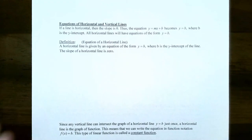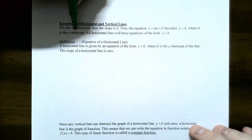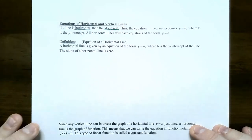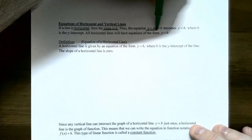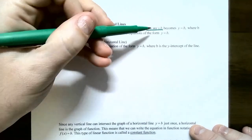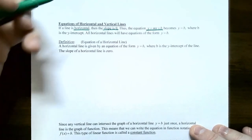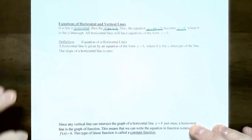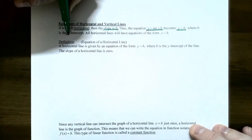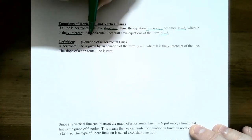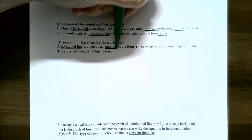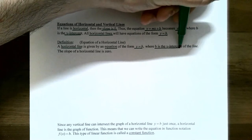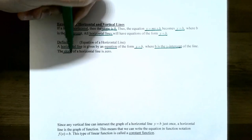Let's start with the equation of a horizontal and vertical line. We already know from the previous video, if a line is horizontal, it has zero slope — there is no vertical change between two points on the horizontal line. A horizontal line is a function since it passes the vertical line test. We can write the equation in slope-intercept form as y equals mx plus b, but if the slope is zero, the zero times x disappears, so the equation of a horizontal line is always y equals b, where b is the y-intercept.